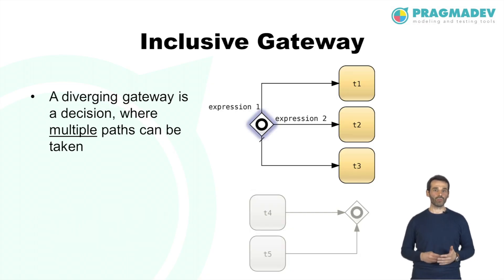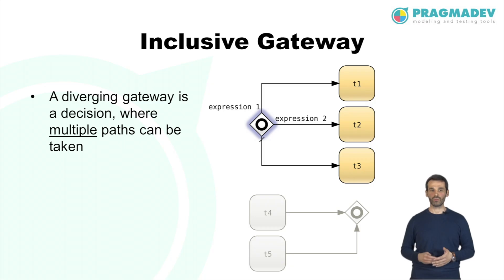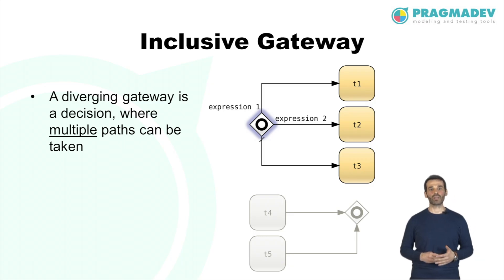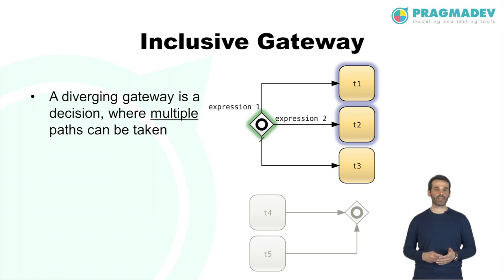A diverging inclusive gateway, or inclusive decision, can create alternative but also parallel paths. Unlike the exclusive gateway, all condition expressions are evaluated, and all paths evaluating to true are taken — from 0 to all combinations. The gateway should be designed so at least one path is taken, and a default path can optionally handle the case where no conditions are true. In the example, both expressions 1 and 2 are evaluated; if neither is true, the default path leads to T3.